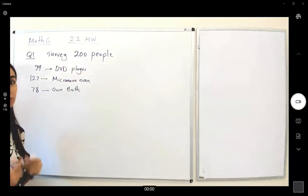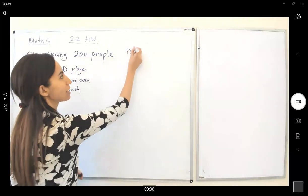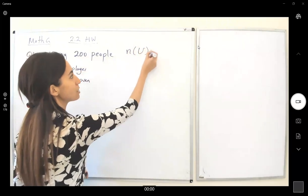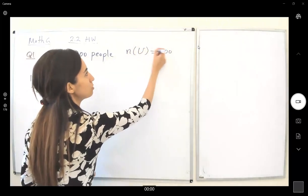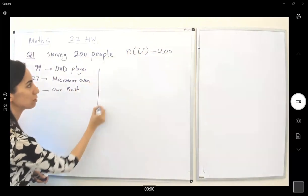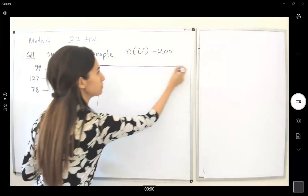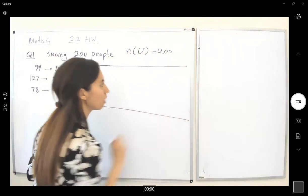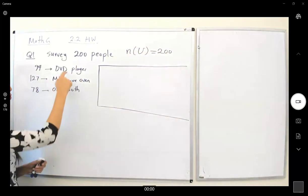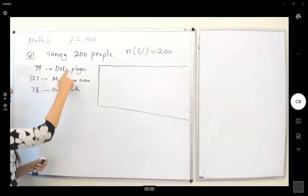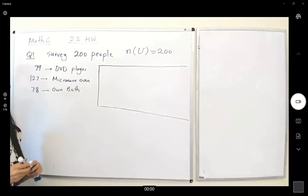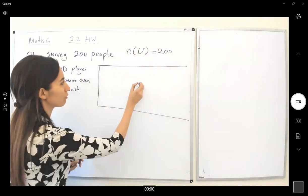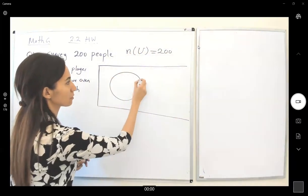So what is this 200? 200 people forms a set that is actually a universal set, so the cardinality of your universal set is equal to 200 people. You have two sets: DVD player owners and microwave owners.